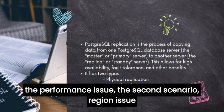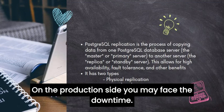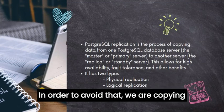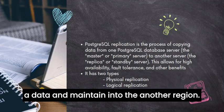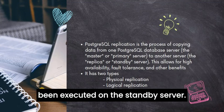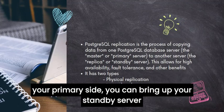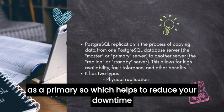The second scenario: a region issue, hardware issue, or disaster on the production side. In order to avoid that, we copy the data and maintain it in another region — in our case, North Virginia — which means your reporting queries can be executed on the standby server. Second, in case of failures or disaster on your primary side, you can bring up your standby server as a primary, which helps to reduce your downtime.